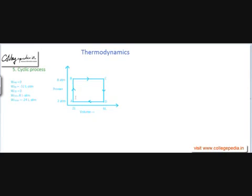One way is to calculate work part by part — from A to B, then B to C, then C to D, then D to A, and add them up. Because work is a scalar quantity, we can calculate it part by part and add it. If we calculate work from A to B: in that process the volume remains constant, so this is an isochoric process, and if volume remains constant the work done will be zero.